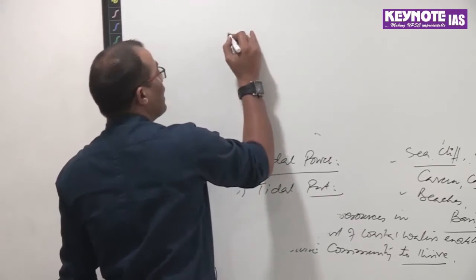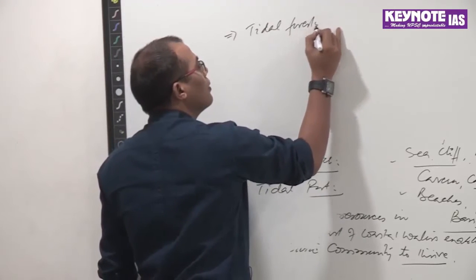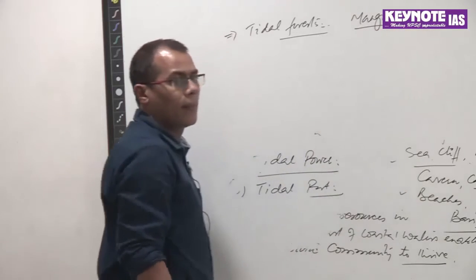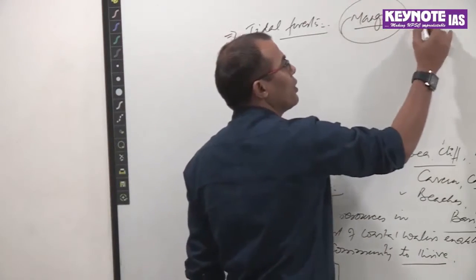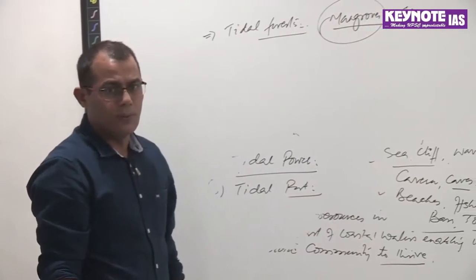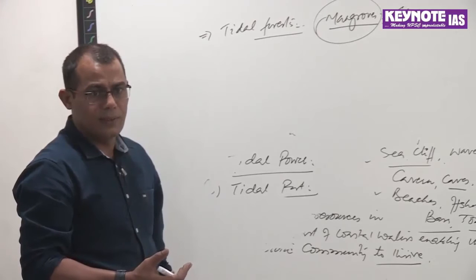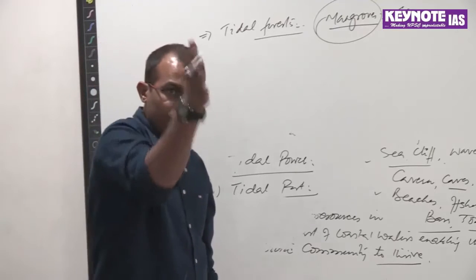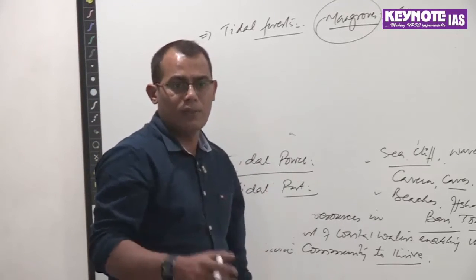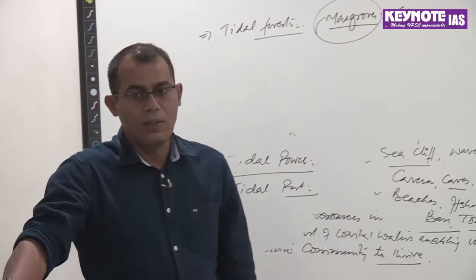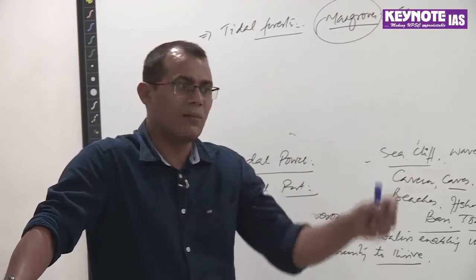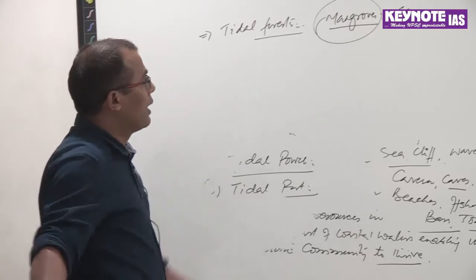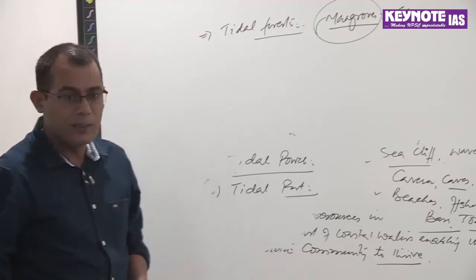Then we have tidal forests — what we call mangroves. The benefits of mangroves are that they act as a shelter for fishes and as a barrier against strong storms. When a storm comes, if you have vegetation, it will reduce the impact of even higher magnitude events like tsunamis. Normal cyclonic waves will have relatively lesser impact if there is mangrove vegetation. It is a specialized ecosystem that thrives only in tidal zones.